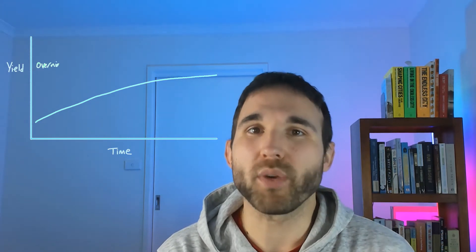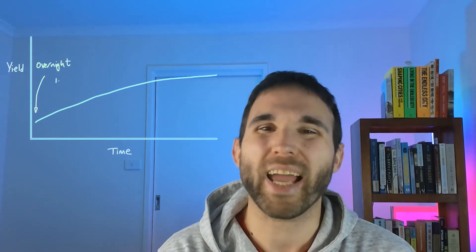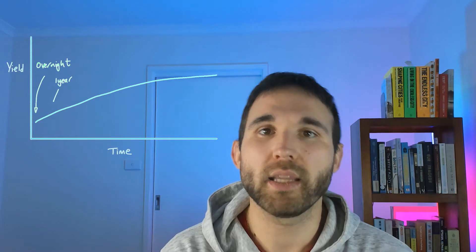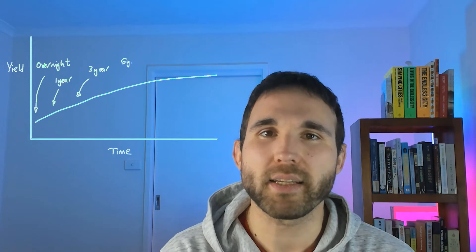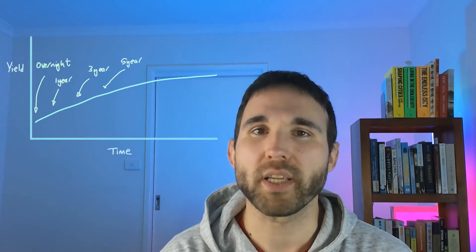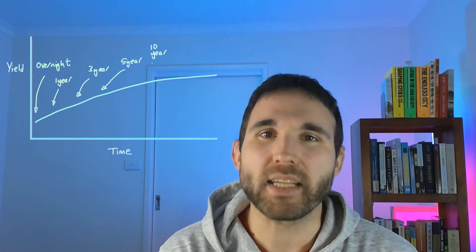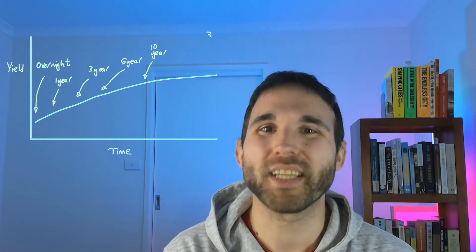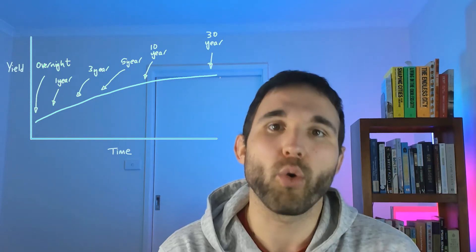We expect the upward-sloping shape we typically see because if you're going to lock up your capital for 30 years — say you're 30 years old and investing with the US government for 30 years — and you hold that treasury to maturity, the interest rate on the 30-year treasury had better be higher than what you could get on a one-year, three-year, or five-year treasury. In the aggregate, most people share this sentiment.